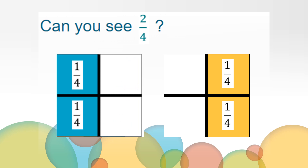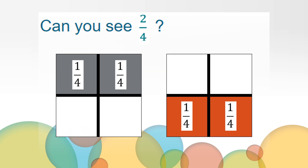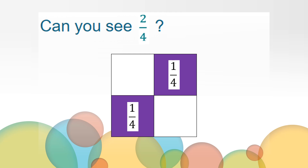If we can see two fourths on the left side, then we can also see two fourths on the right side like this. If we can see two fourths on the left side and the right side, that also means that we can see two fourths on the top and two fourths on the bottom. Can you see two fourths on the left side? Can you see two fourths another way? How about this? Does this show two fourths? It sure does. If we can show it this way with diagonal fourths.